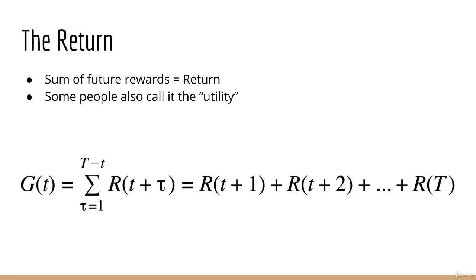We call the sum of future rewards the return. We describe the return mathematically using the symbol G. Because it depends on future rewards only, it is time-dependent, so we index it with a t. We can say the return at time t is the sum of rewards at time t plus 1 up to the terminal state at time big T.